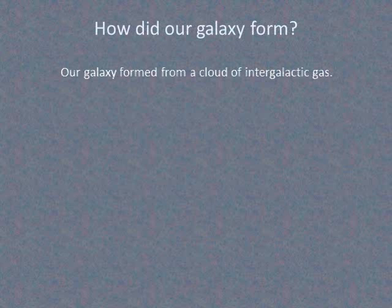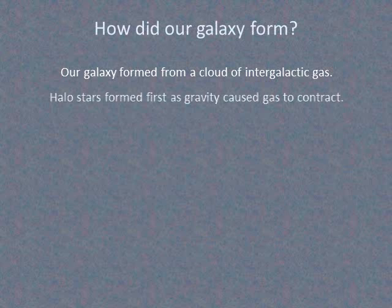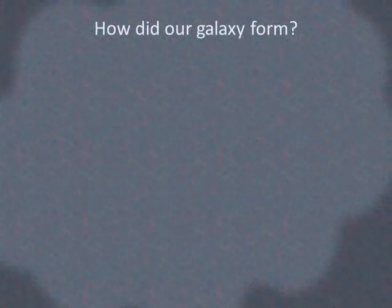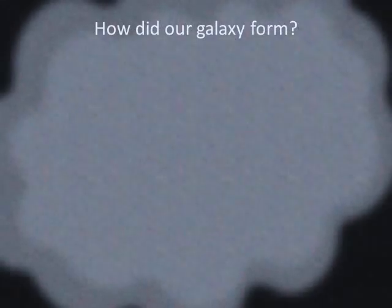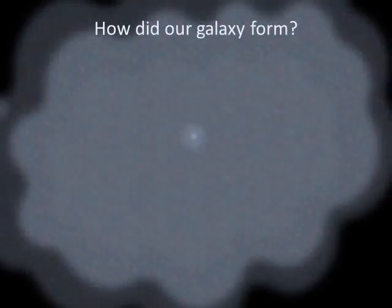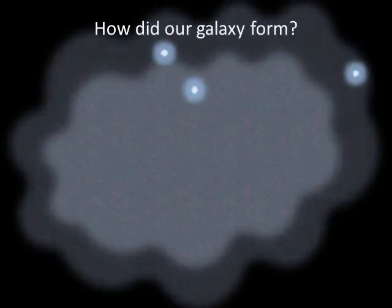In the simplest model of galactic formation, our Milky Way began as a giant protogalactic cloud of hydrogen and helium gas. Halo stars formed first as gravity caused the cloud to contract. Early on, gravity drew in matter from all directions, creating a cloud that was blobby in shape with little or no measurable rotation.